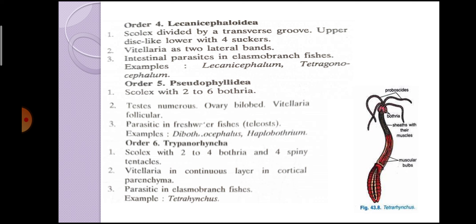Next order is Order Trypanorhyncha. The scolex has two to four bothria and four spiny tentacles. Vitellaria form a continuous layer in the cortical parenchyma. They are parasitic in elasmobranch fishes. Example is Tetrarhynchus, whose diagram can also be seen here.